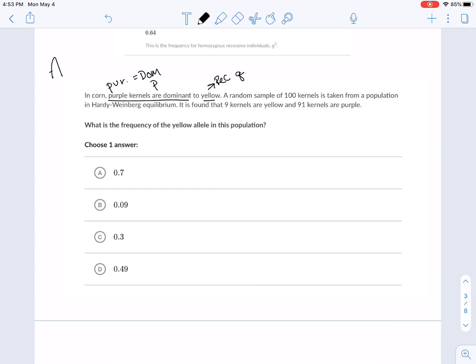A random sample of a hundred kernels is taken from a population in Hardy Weinberg equilibrium. It is found that nine kernels are yellow and 91 are purple. So let's look at the information that we have in front of us. We know that purple are dominant. So which genotypes would give you a dominant outcome? Both of those genotypes are going to be dominant, correct? They're both going to show you the dominant trait. Whereas this would be purple. And if we're dealing with the yellow, we have little a, little a as our only genotype, right?